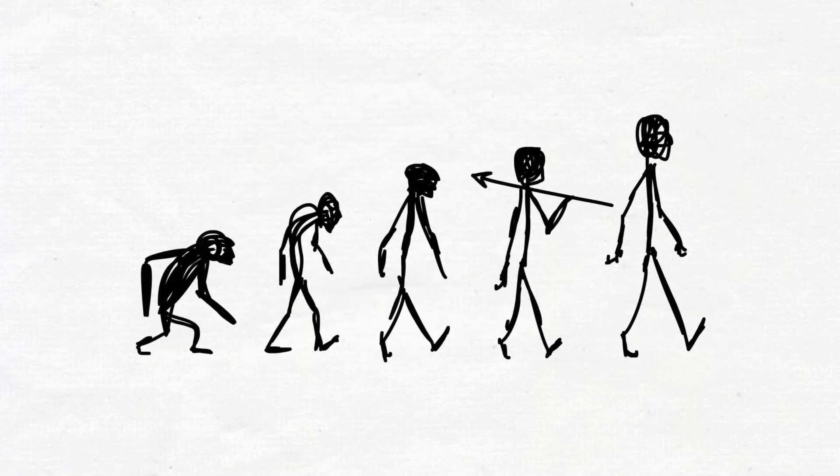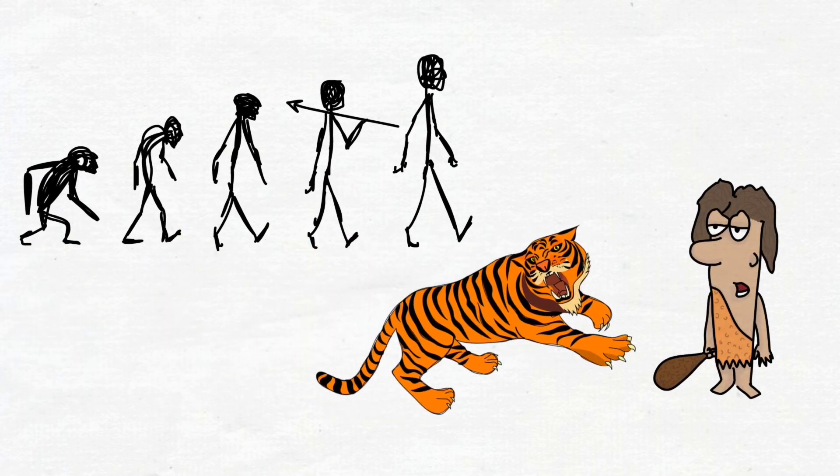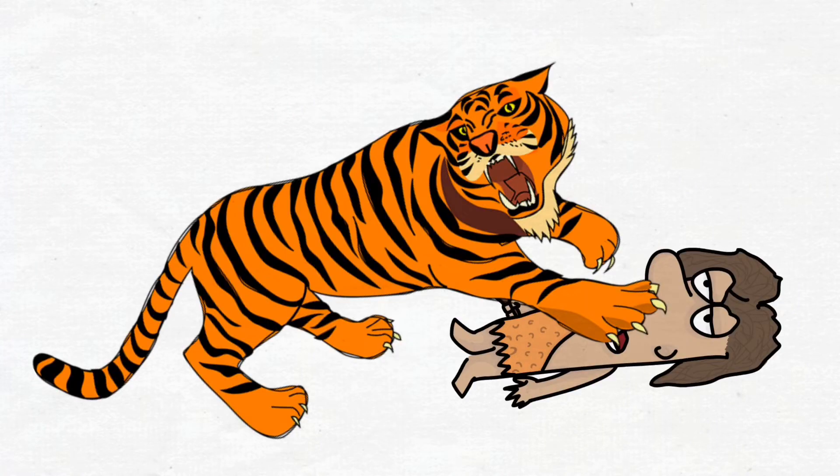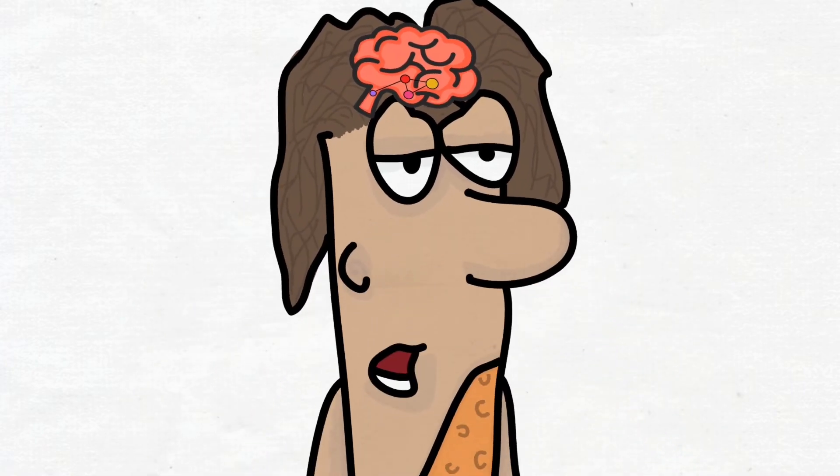For millions of years, our ancestors lived in danger of being attacked by bigger, faster, and stronger predators. For them, the reality was: stop to think and you're lunch. So evolution put that fast and automatic defense circuitry into their brains, and into our brains.